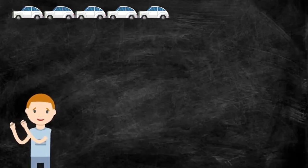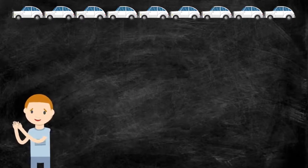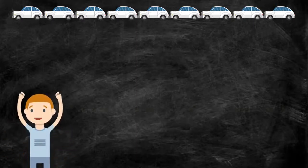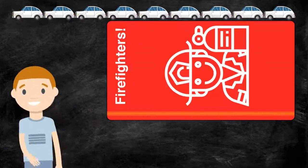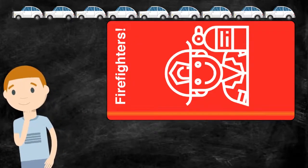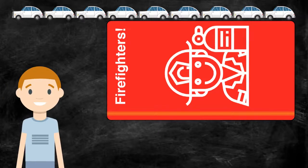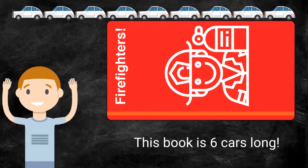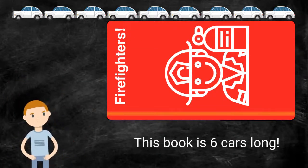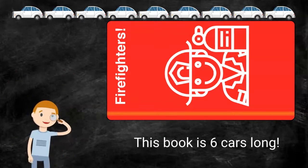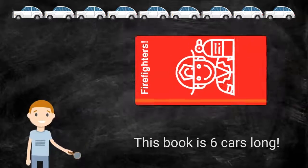Let's take the cars Erica found and place them end to end. We can now use them to measure the length of more objects. What is the length of this red firefighter book? Yes! This book is six cars long. The book is placed at the end of the first car. We then look to the other side of the book and count the cars.